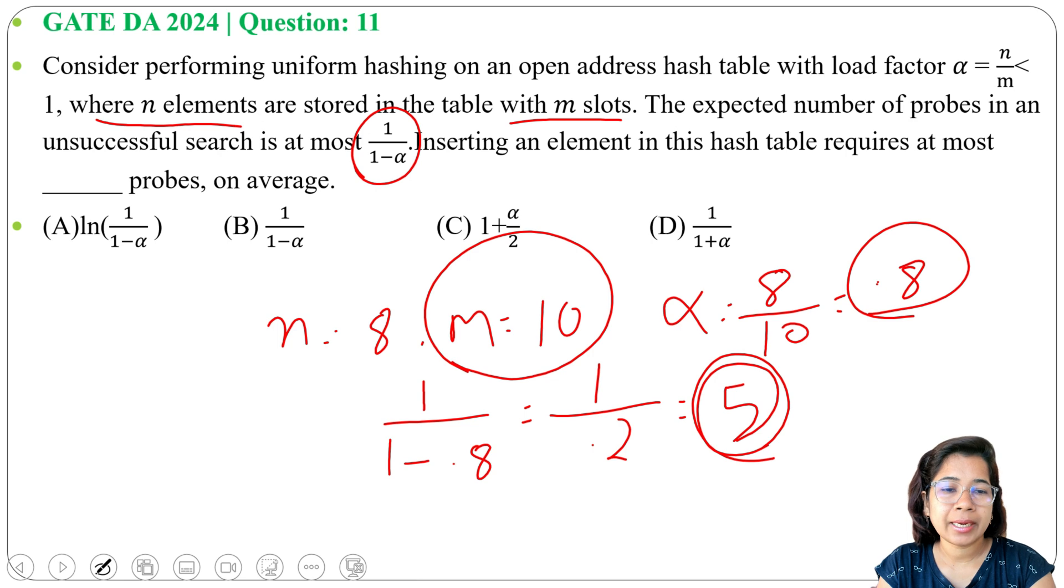Now inserting an element in this hash table requires at most dash probes. So for unsuccessful search it is 1 divide 1 minus alpha. For inserting an element we require same number of probes. First we need to find the slot.